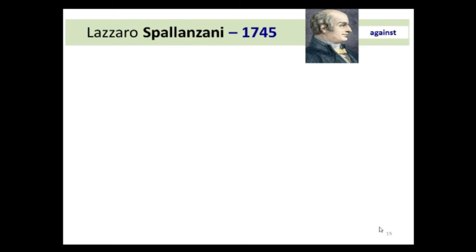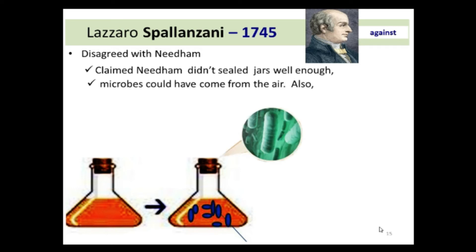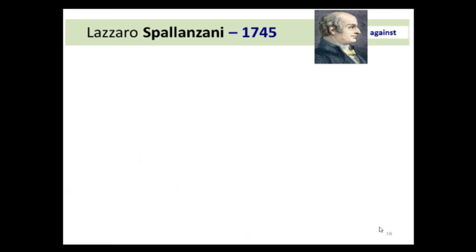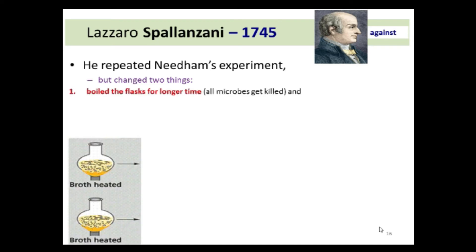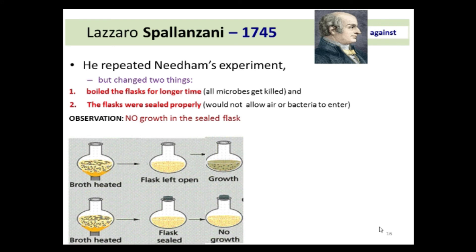Lazaro Spallanzani was another scientist who did experiments to disprove the theory of spontaneous generation. He disagreed with Needham's experiments and pointed out some flaws. Spallanzani claimed that Needham didn't seal the jars well enough, so microbes could have come from the air, and he also failed to heat the vials sufficiently to kill all the microbes. Spallanzani repeated Needham's experiment but boiled the flask for a longer time and sealed the flask properly so no air or bacteria could enter.